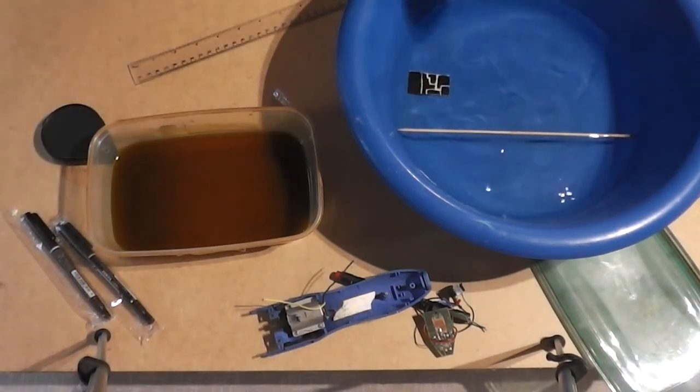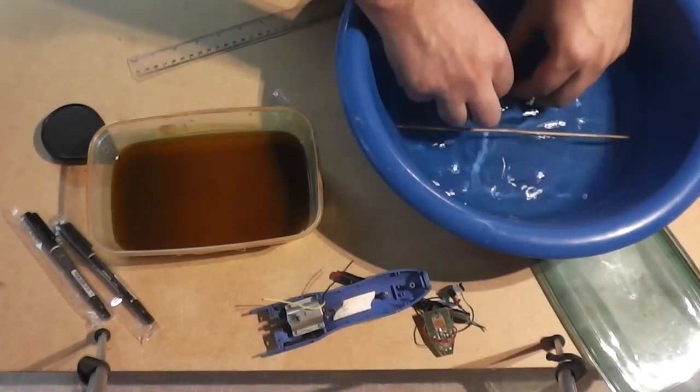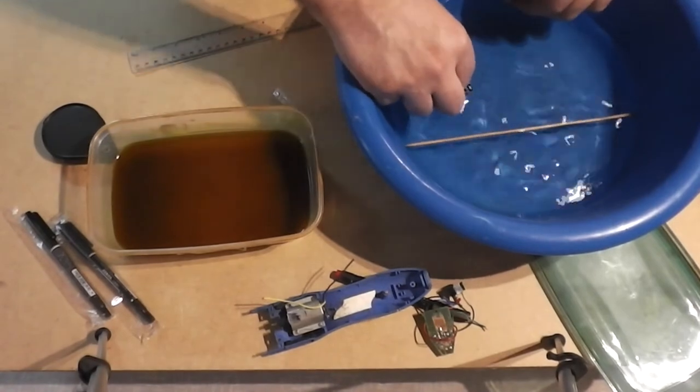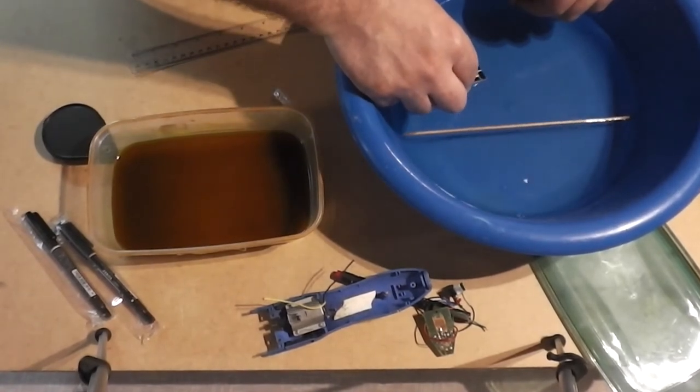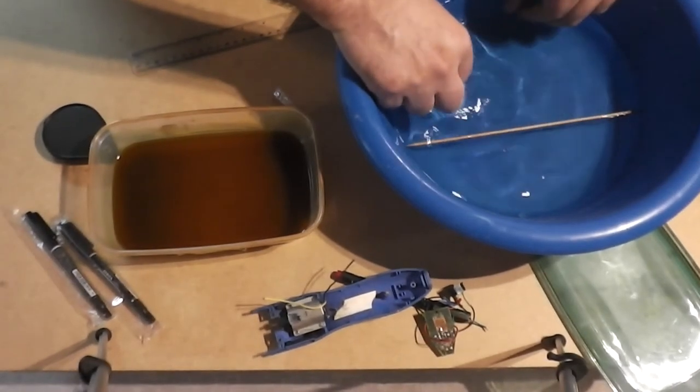Washing the board in clean water to remove traces of etching. This solution is very aggressive to all metal parts, so it's not recommended to